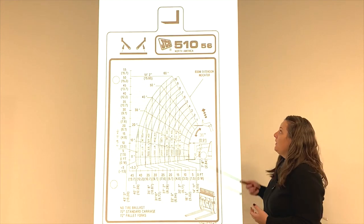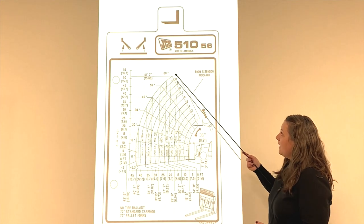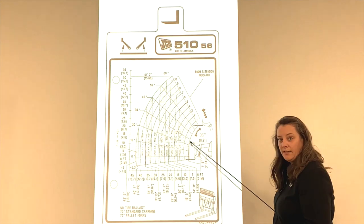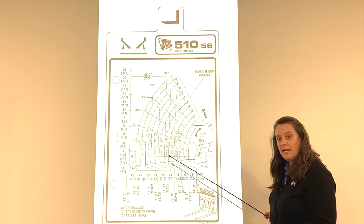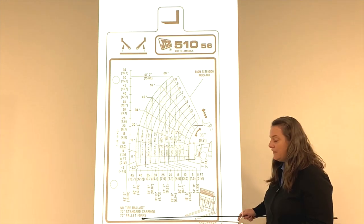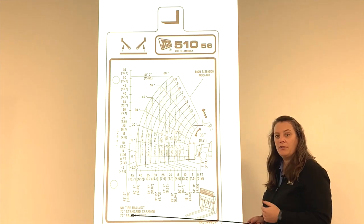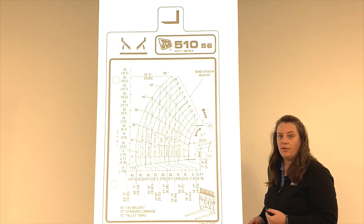Beyond being specific to the model and the attachment, you'll also find the load center. The load center is indicated by half the distance of the fork, and that's really important because it changes how much weight you're going to be able to put on the machine.